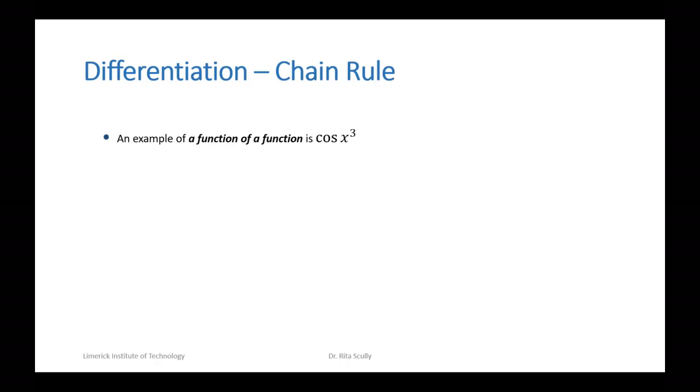The chain rule is used when we need to differentiate a function of a function. One example of this is cos x to the power of 3. This is different from the standard cos x. So here we basically have two functions, f of x and g of x.